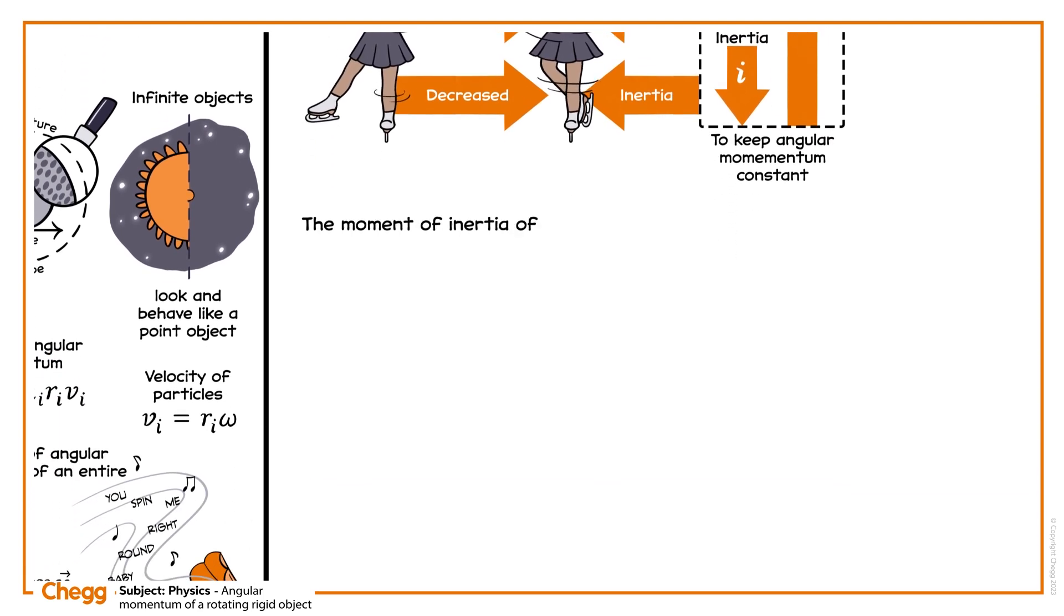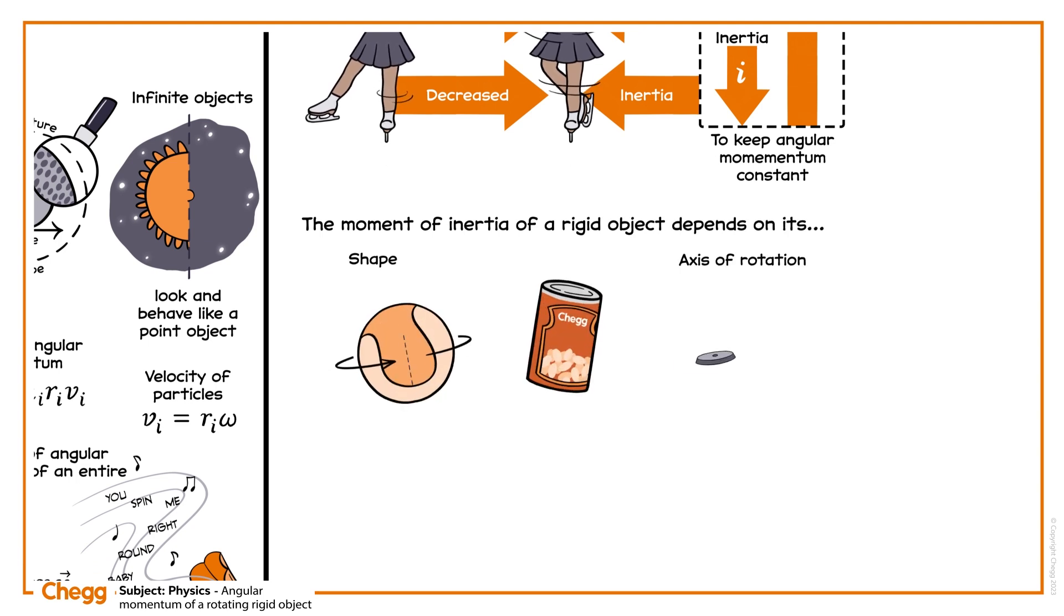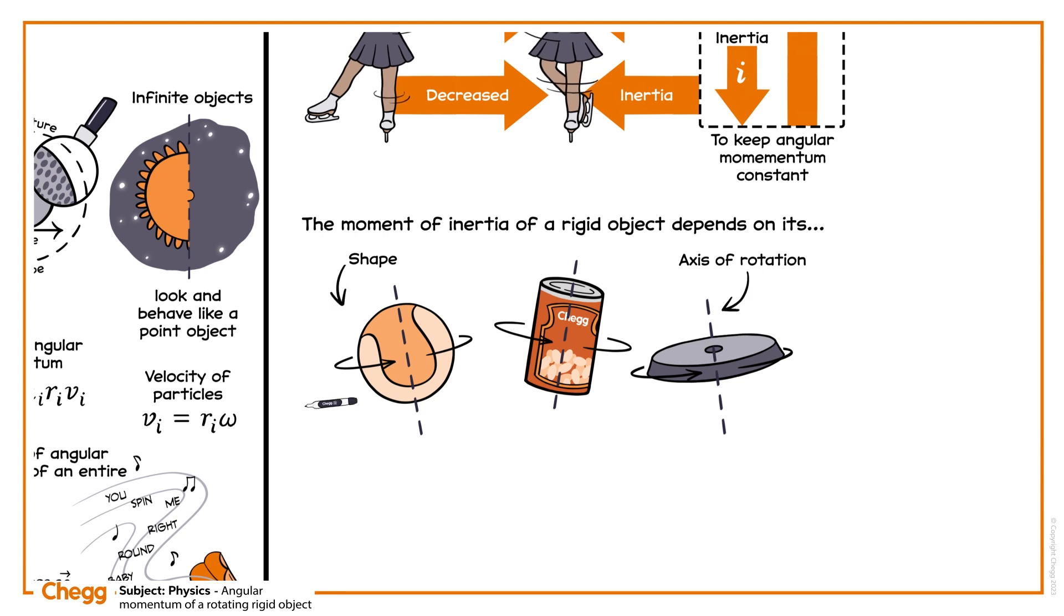The moment of inertia of a rigid object depends on its shape and axis of rotation. Here are some common rotating rigid objects and the formula used to calculate their moment of inertia.